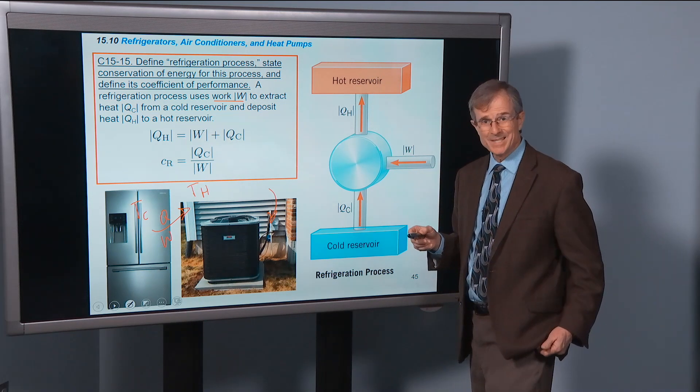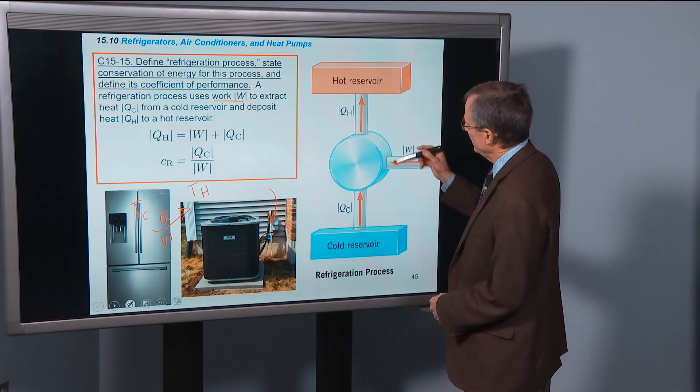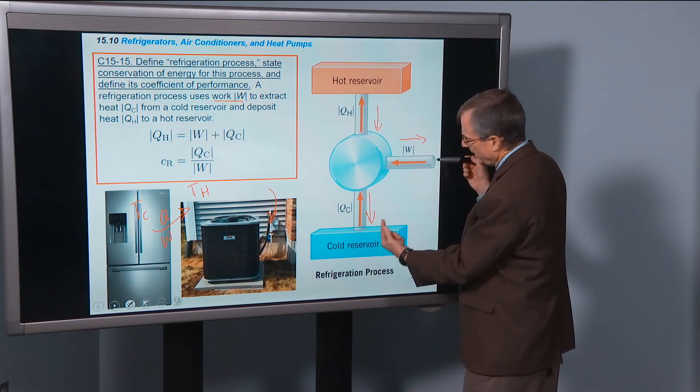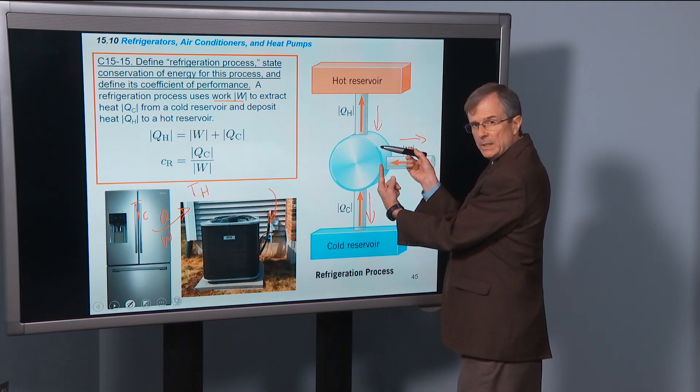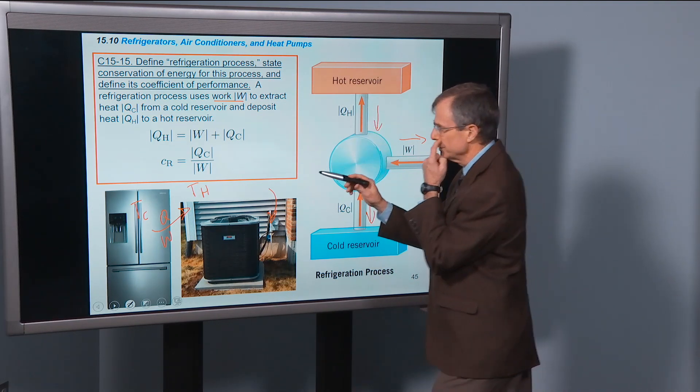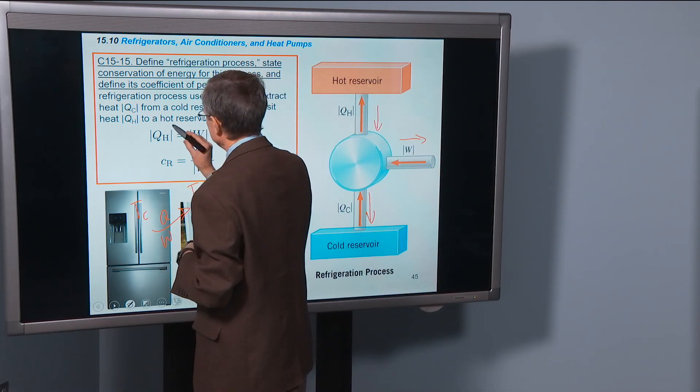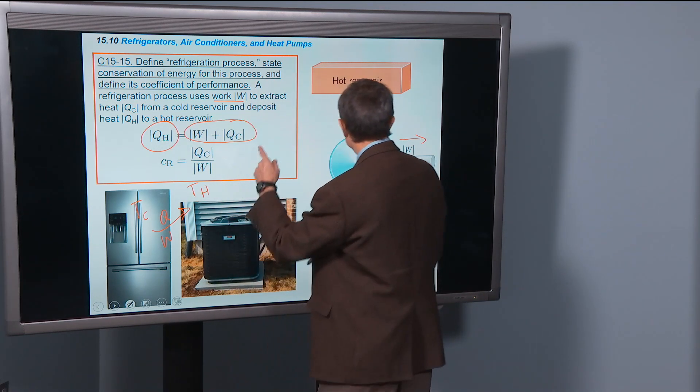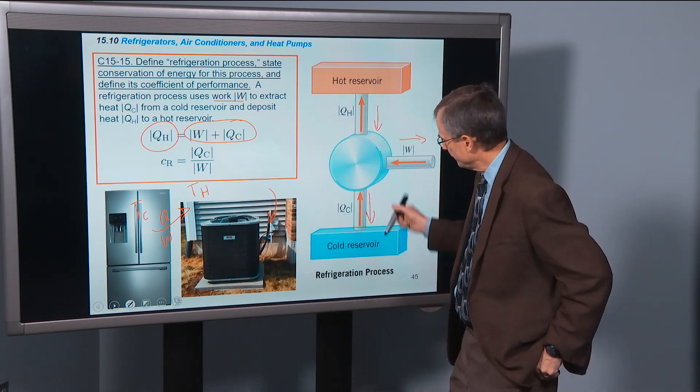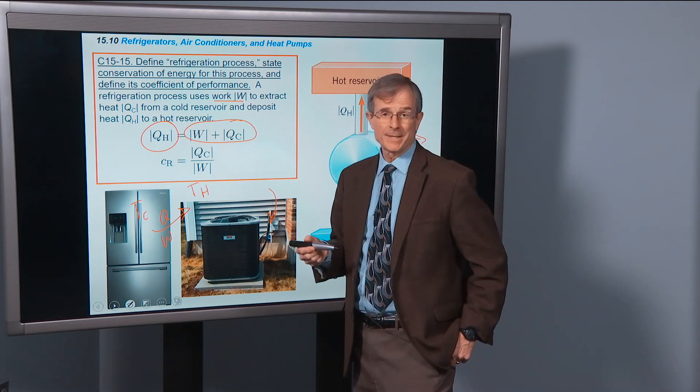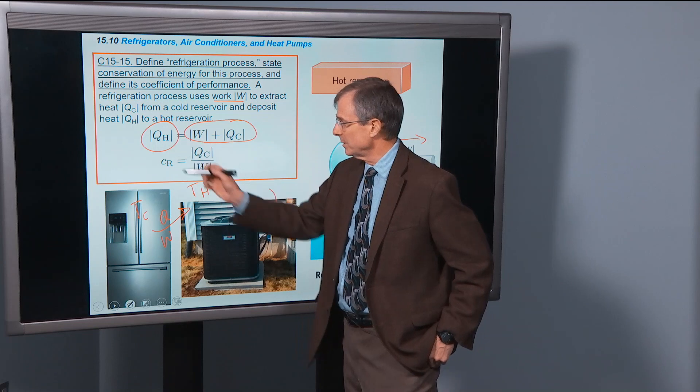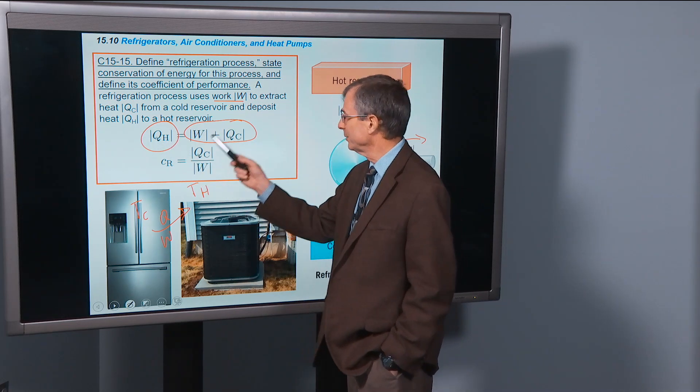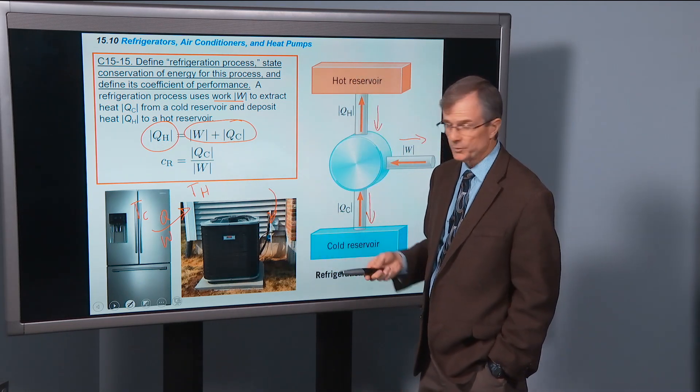Well, conservation of energy looks exactly the same as it did before. Before with the heat engine, all these arrows had reverse directions. But now the input energy is the work plus Qc, and the output energy is Qh. So what we've done is replaced what used to be the input is now the output, and what used to be output is now input. The work done plus the heat taken from the cold reservoir. But the equation is exactly the same. So you just have to remember for this, as well as for the heat pump that we'll do in just a minute, Qh is over here by itself, and W and Qc are over by themselves together on the other side of the equation.